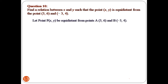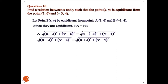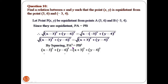Point P(x, y) is equidistant from A(3, 6) and B(-3, 4), so PA = PB. Squaring both sides: (x - 3)² + (y - 6)² = (x + 3)² + (y - 4)².